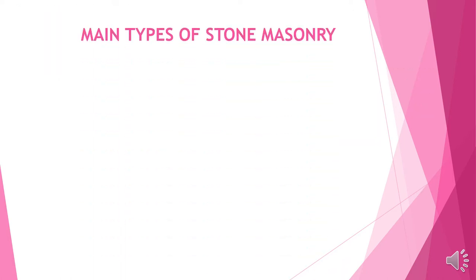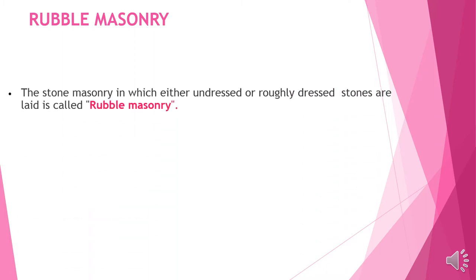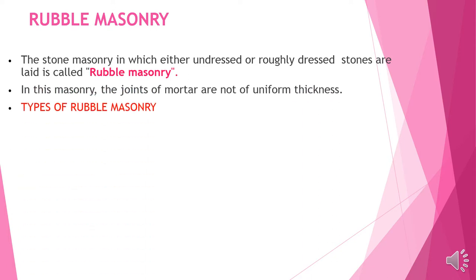The main types of stone masonry are rubble masonry and Aslar masonry. Rubble masonry is the stone masonry in which either undressed or roughly dressed stones are laid. In this masonry, the mortar joints are not of uniform thickness.